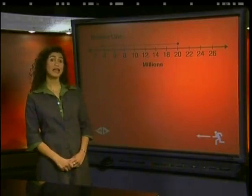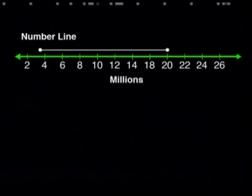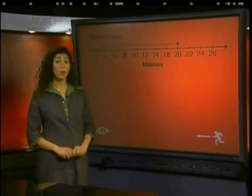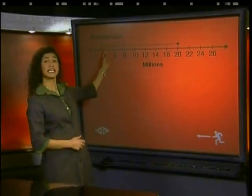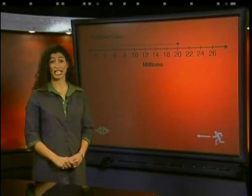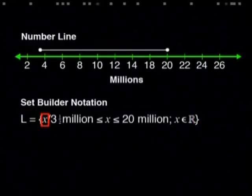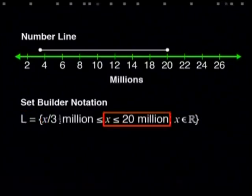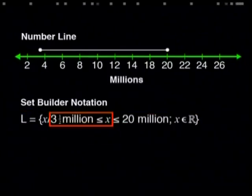And when we write this on a number line, it looks like this. This time we have not used separate dots on each number. Why do you think we have used a line to join the dot on 3.5 million to the dot on 20 million? Well, the amount one could be any number in rands and cents between these two amounts. So our x is any real number between these two amounts, although it would be rounded off to rands and cents. Easy, hey? We can also represent this inequality using set builder notation like this: L is the set of all x such that x is smaller than or equal to 20 million and greater than or equal to 3.5 million, where x is an element of real numbers.